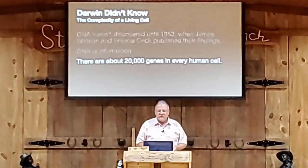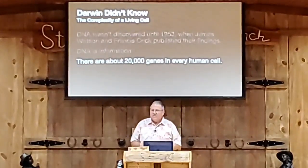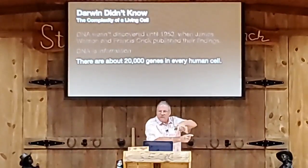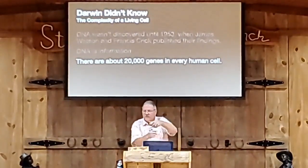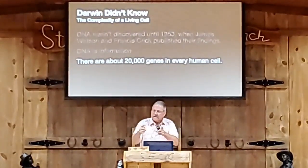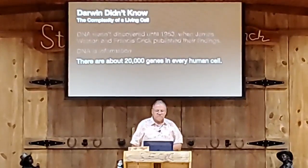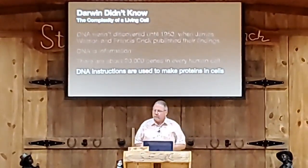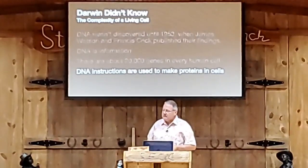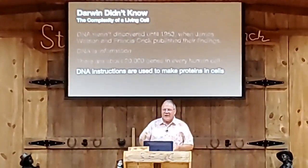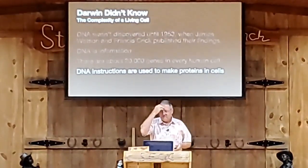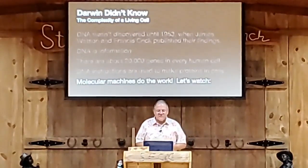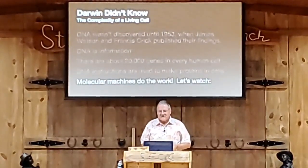There are about 20,000 genes in every human cell. The entire strands of DNA are one gene followed by another, each of various lengths along that DNA segment. DNA instructions are used to make proteins in the cell.